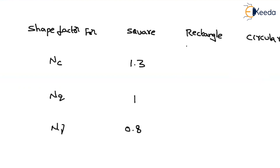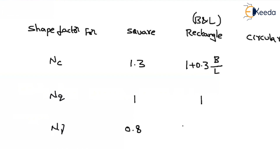If it is a rectangle with dimensions B and L, the shape factor for Nc is 1 plus 0.3 times B divided by L, the factor for Nq is 1, and the factor for Nγ is 1 minus 0.2 times B divided by L. If B equals L, these reduce to the square values — 1.3, 1, and 0.8 respectively. So if you remember the rectangular formulas, you can derive the square values, or you can directly memorize them.